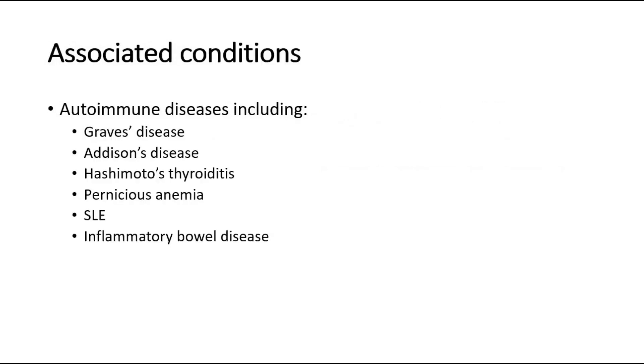Vitiligo is often associated with autoimmune diseases, such as Graves' disease, Addison's disease, Hashimoto's thyroiditis, pernicious anemia, SLE, and inflammatory bowel disease.